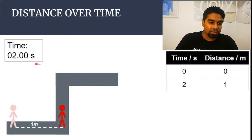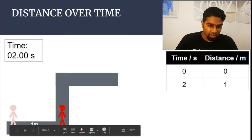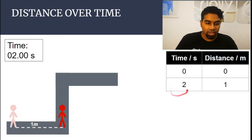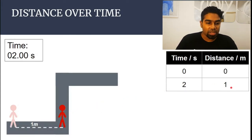At time two seconds, Mr. Red has gone from here to here. He has traveled a total distance of one meter. So at two seconds we record his distance moved is one meter.